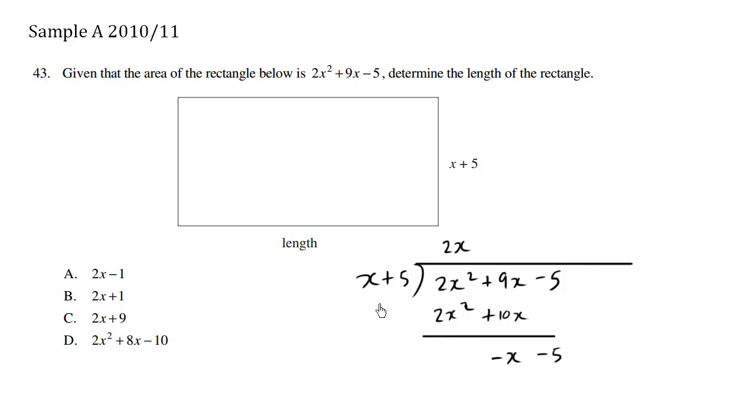So how many times does this factor here fit into here? We'll just say negative 1 times. So negative 1 times x is going to be negative x. Negative 1 times 5 is going to be negative 5. And when we subtract nothing is left, there's no remainder.